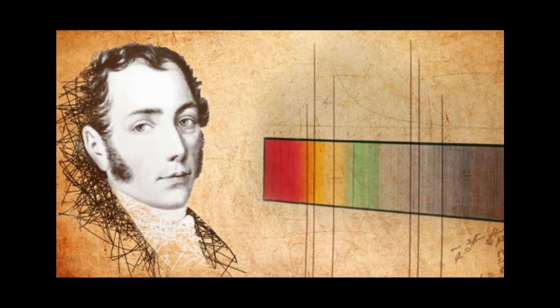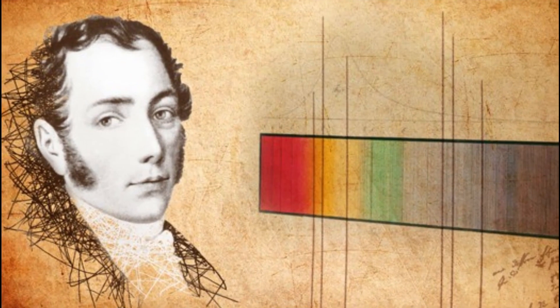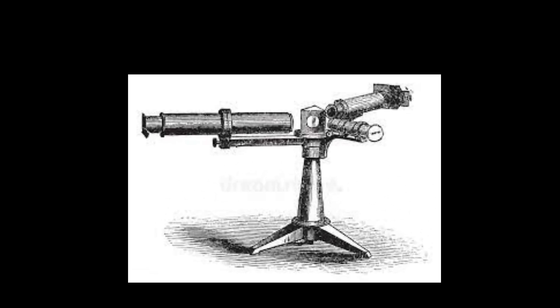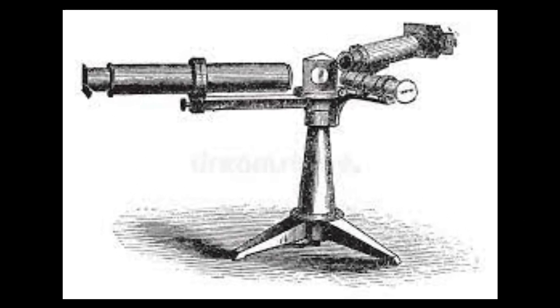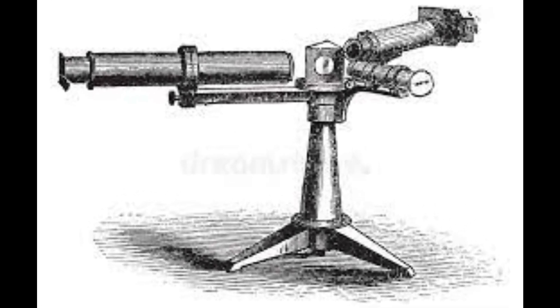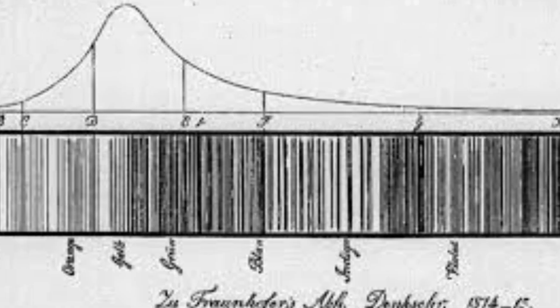Joseph Fraunhofer, for example, mounted a prism in front of the objective lens of a small telescope, making a crude spectroscope. He found that when light from the sun and bright stars like Sirius was analyzed, there were characteristic absorption lines — dark lines — present in the spectrum produced.